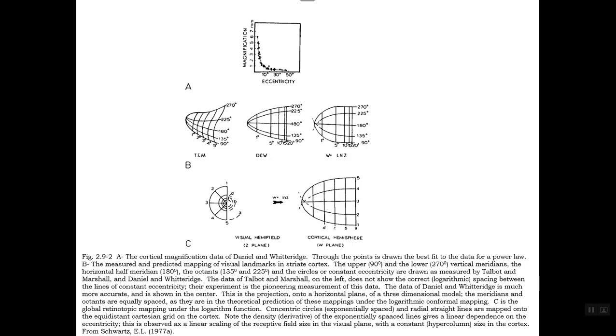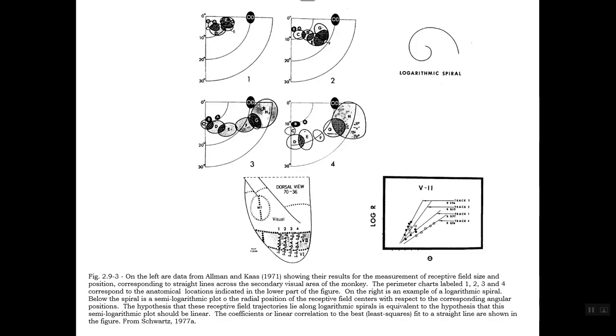Now, this is a logarithmic conformal map. This is studies by Allman and Cass in monkeys, where they've presented flashes of light to the monkeys. Then they measured the responses of neurons in the visual cortex, visual V1 and V2, and found that there's a spiral in the retina mapped to straight lines in the visual cortex. So that's the logarithmic spiral. That's the essence of the conformal map.